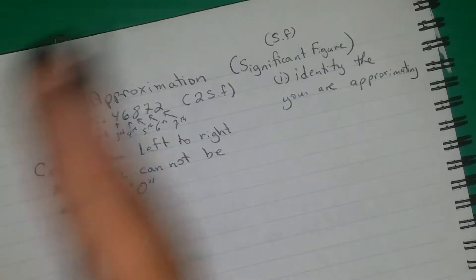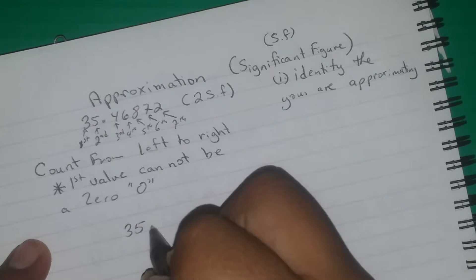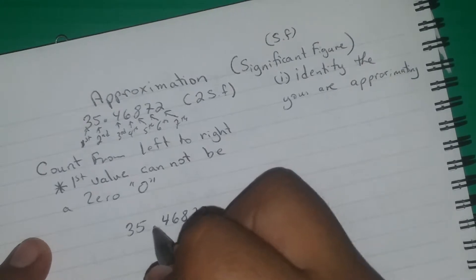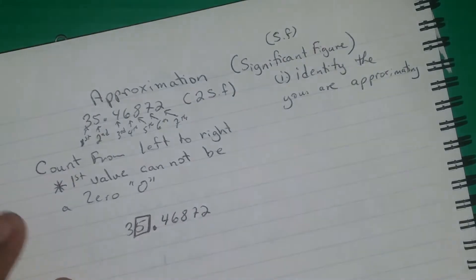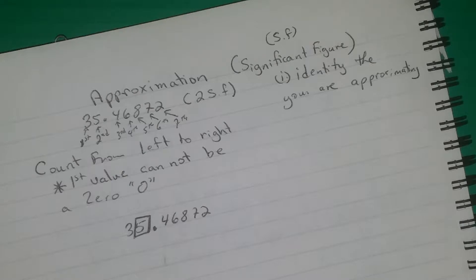Count from left to right but your first value cannot be a zero — keep that in mind. So my second significant figure for the problem 35.46872 is the 5. After you have found which number you're approximating, you apply the same rule we used for place value and decimal place: look at the number that follows.